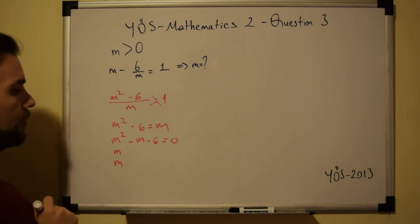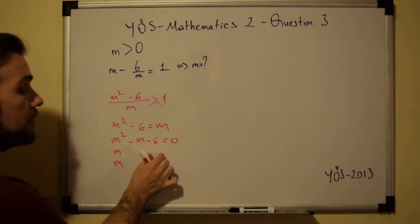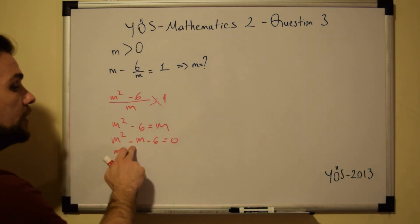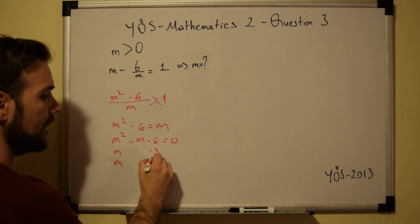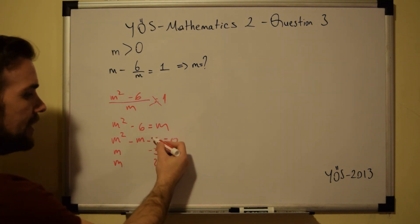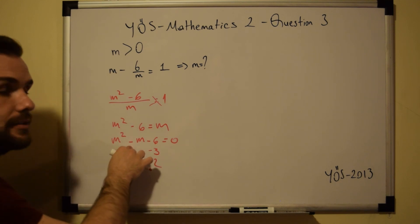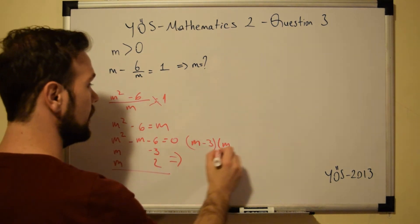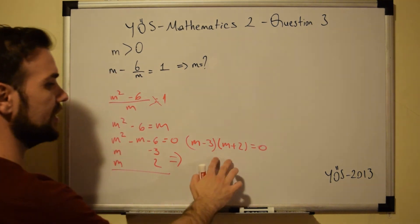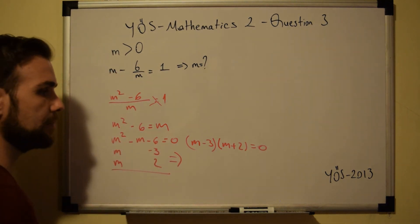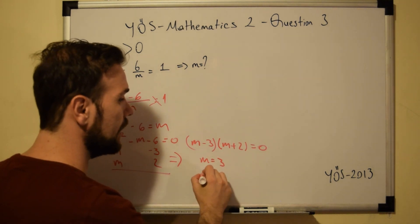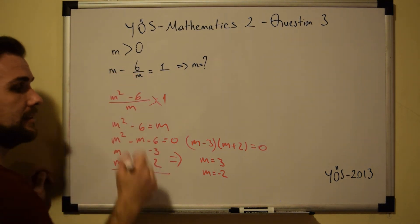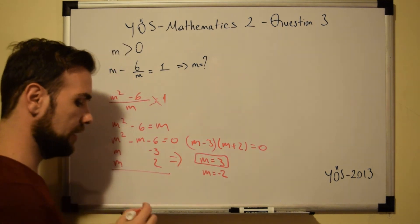We need to factor this. M times M gives M squared. We need two factors of 6 that multiply to give minus 6 and add to give minus 1. Those are minus 3 and 2, since 2 times minus 3 is minus 6 and minus 3 plus 2 is minus 1. So we have M minus 3 times M plus 2 equals 0, giving M equals 3 or M equals minus 2. Since M must be greater than 0, the value of M is 3.